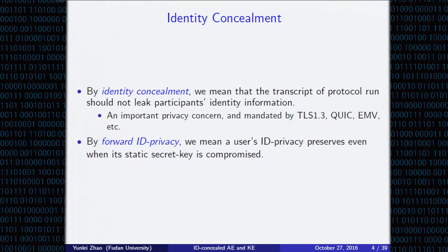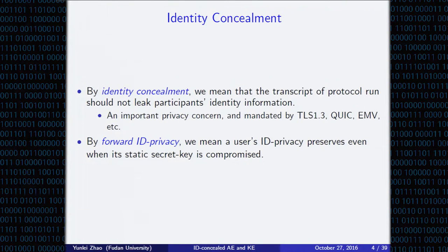By identity concealment, we mean that the transcript of the protocol run should not leak participants' identity information, which is deemed as an important privacy concern and mandated by some important standards, including TLS 1.3, QUIC, EMV, and so on. By forward ID privacy, we mean that a user should preserve its privacy even if his static private key is exposed.